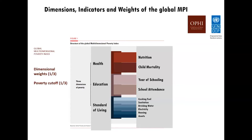Further deprivations include lacking electricity, having a housing structure with natural or rudimentary roof, wall, or flooring materials, and not owning more than one of a small set of assets such as radio, telephone, television, animal cart, bicycle, motorcycle, refrigerator, or computer. If you own a car or truck, you are not deprived in assets.